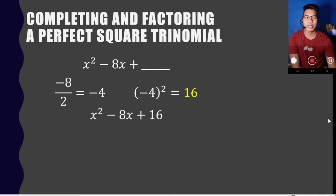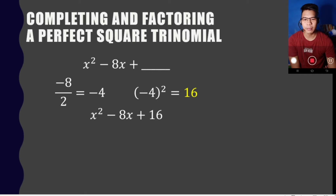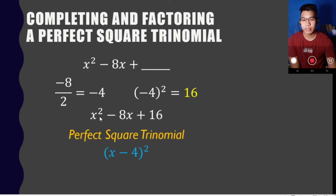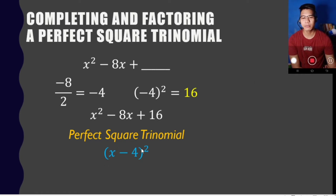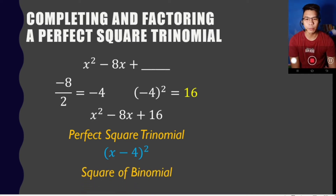We now have our perfect square trinomial and are ready to convert it into a square of binomial. We get the square root of x squared, which is x, then copy the sign of the middle term, which is minus, and get the square root of the third term: the square root of 16 is 4. Putting it together with quantity squared gives us quantity x minus 4, quantity squared.